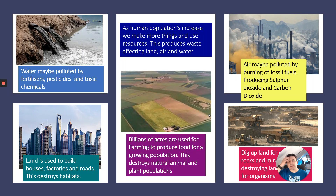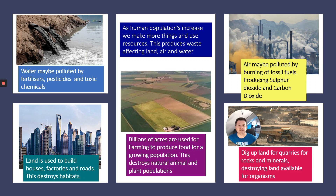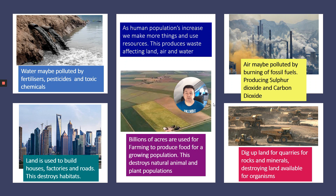As human populations increase, we make more things and use more resources, producing waste that affects land, air, and water. Water pollution is caused by fertilizers from farmers' fields, pesticides, and toxic chemicals from manufacturing. Air pollution comes from burning fossil fuels, producing sulfur dioxide — the main gas causing acid rain — and carbon dioxide, the main gas causing global warming.